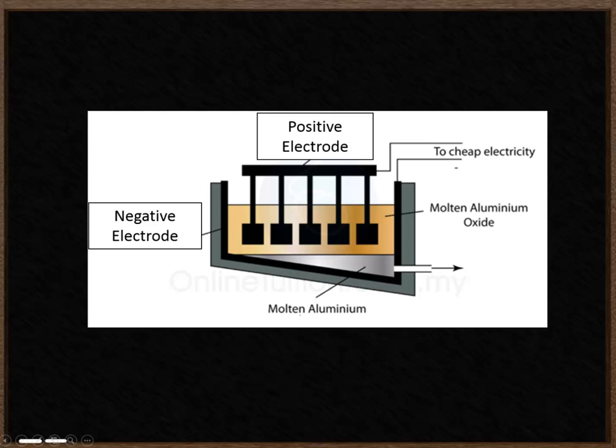They might show you a diagram of what this circuit looks in reality. You have your positive electrode, which are these electrodes dangling down into the mixture of aluminium and aluminium oxide. Around these electrodes, you're going to have forming oxygen gas. So around these ones, you have O2 gas, and you'd see bubbles of gas being given off by these electrodes.